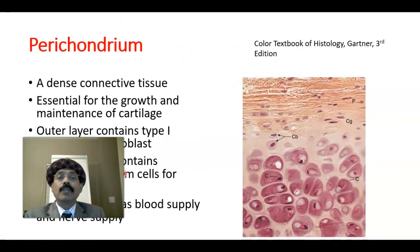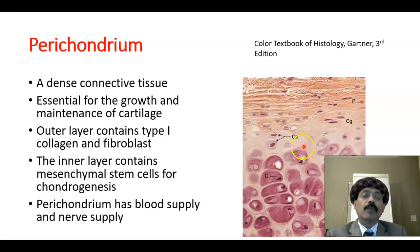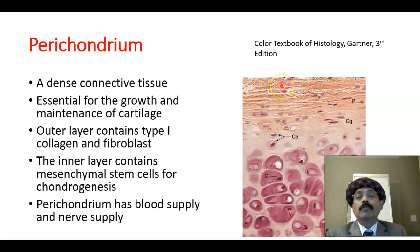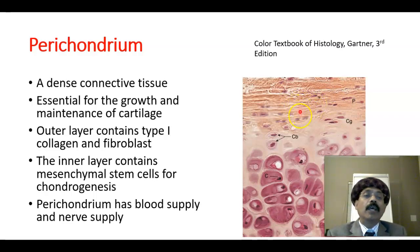The perichondrium is a dense connective tissue, essential for the growth and maintenance of cartilage. The outer layer contains type 1 collagen and fibroblast cells. We have to remember that hyaline cartilage itself has type 2 collagen. The inner layer contains mesenchymal stem cells for chondrogenesis — this is the chondrogenic layer. The perichondrium has both blood supply and nerve supply.